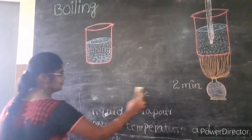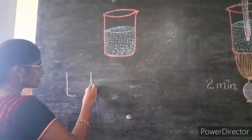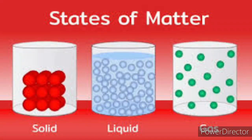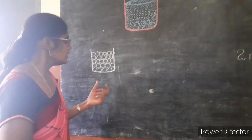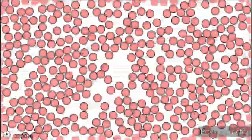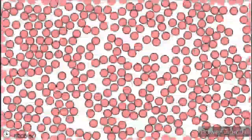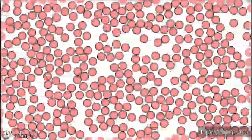Let me explain clearly. You already know the three states of matter: solids, liquids, and gases. In solids, the bond strength between molecules is very high and the distance between molecules is negligible — they are tightly packed. In liquids, the bond strength is less than in solids, and the distance between molecules is greater than in solids.